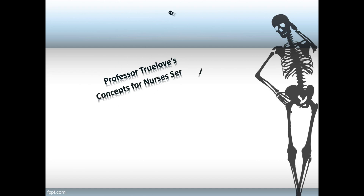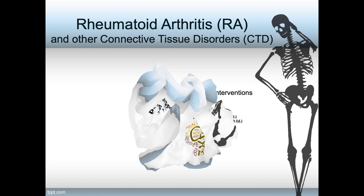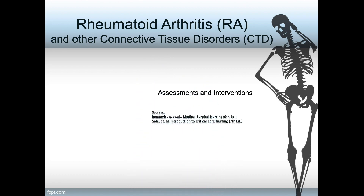Hi y'all and welcome to Professor Trulove's Concepts for Nurses series. I am Professor Terry Trulove. In this episode, part of the orthopedic series, we will look at rheumatoid arthritis or RA and a couple of other CTDs — that is, connective tissue disorders. Sources for this episode include E's Medical Surgical Nursing 9th edition and Sol's Introduction to Critical Care Nursing 7th edition.